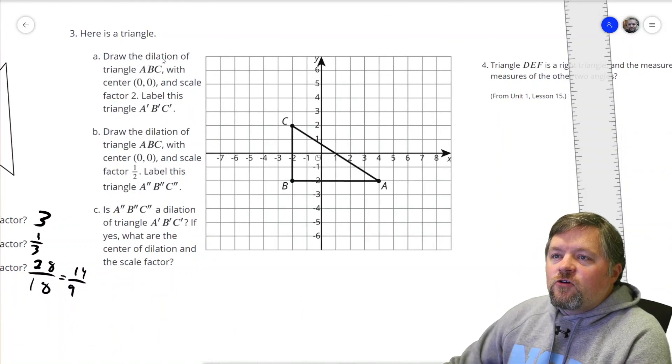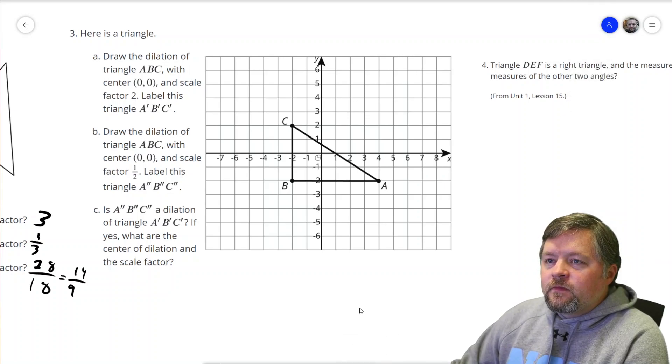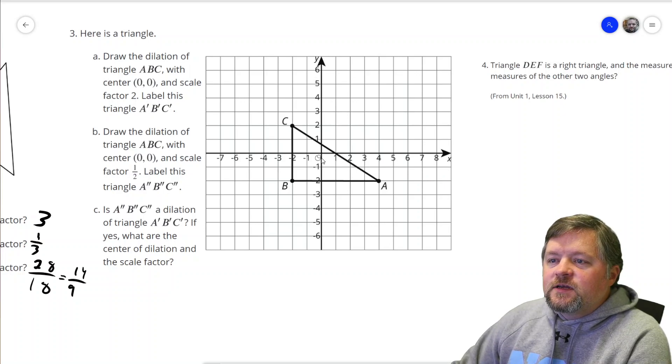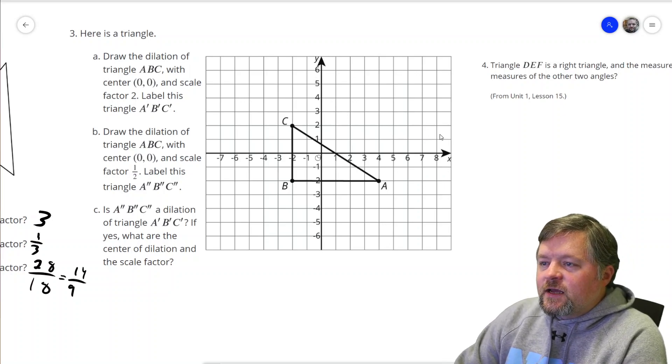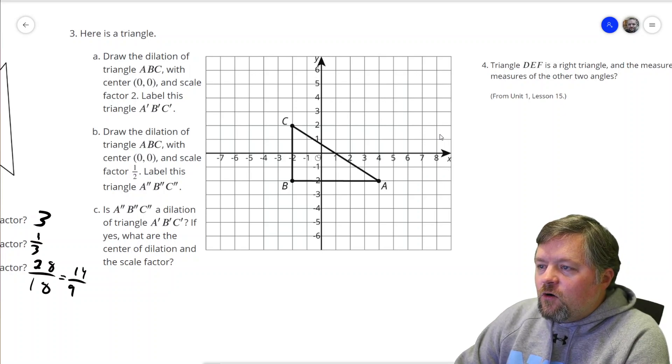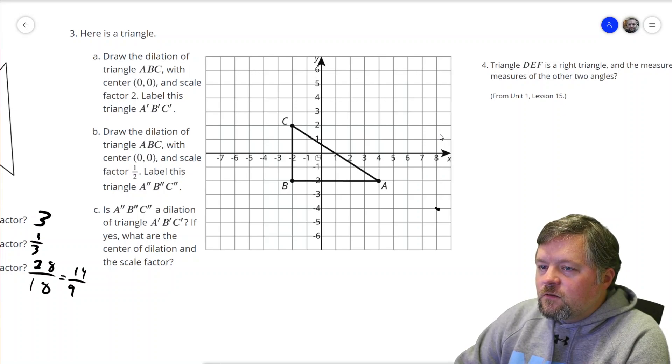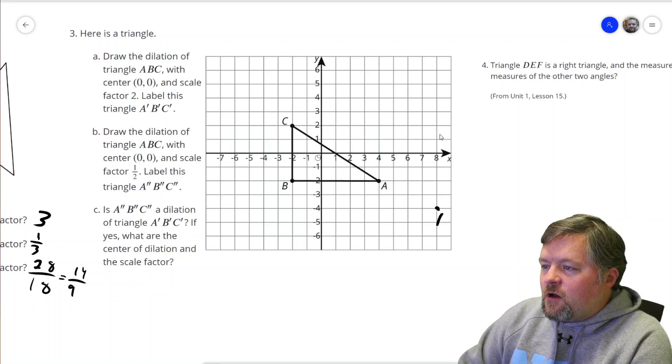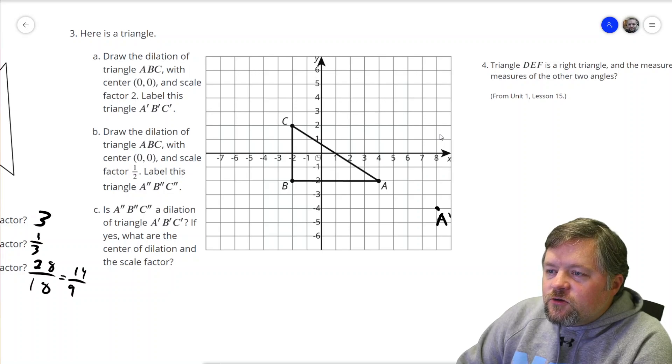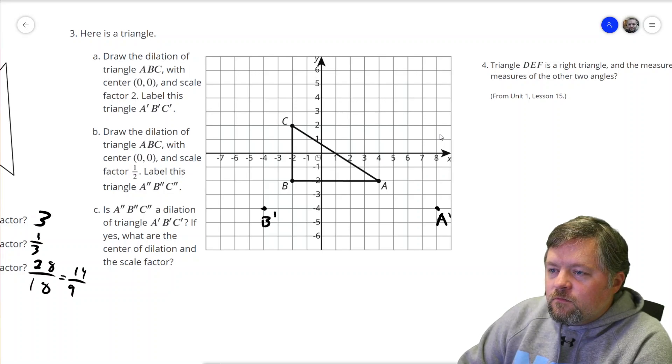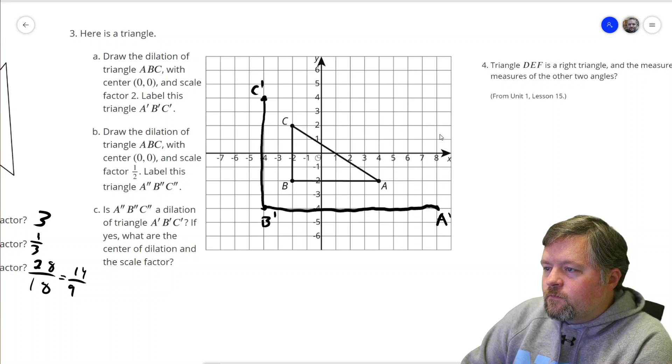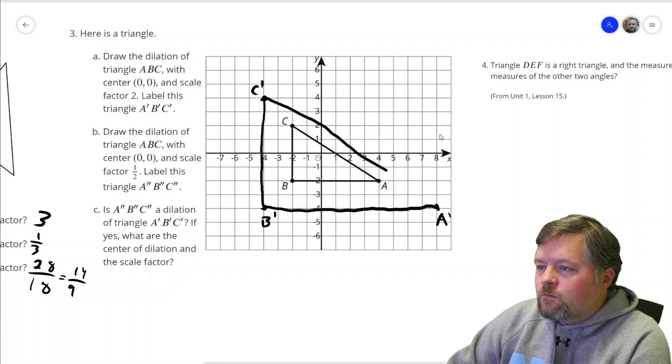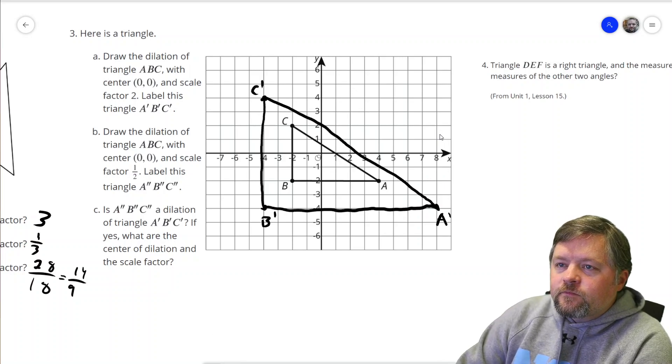Okay, here is a triangle. Draw a dilation of triangle ABC with center of the origin (0,0) and a scale factor of 2. Label this ABC prime. So scale factor of 2, doubling everything. Point A is 4 over and down 2, so we're going to be 8 over and down 4. Tells us to label these ABC prime. A prime. B is (2,2), which will become (4,4). C is (2,2), which will become (4,4).